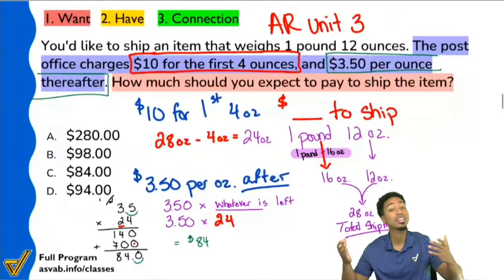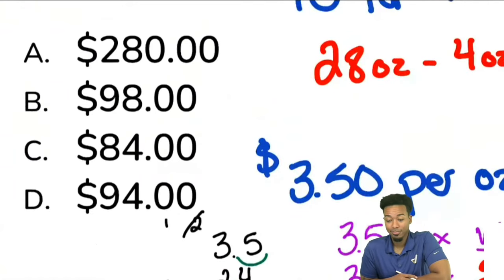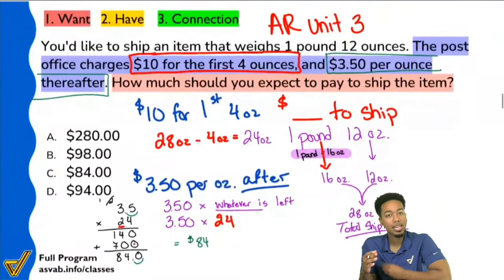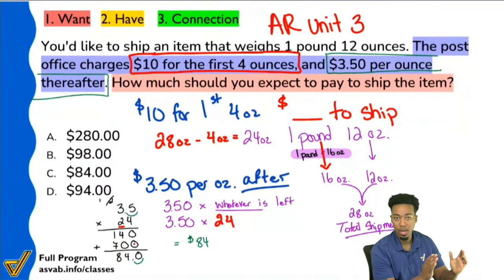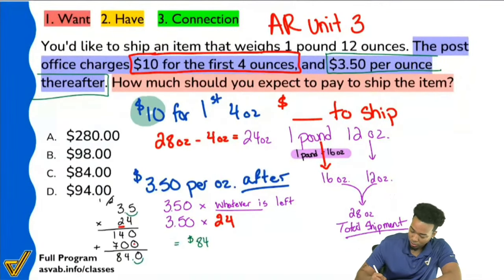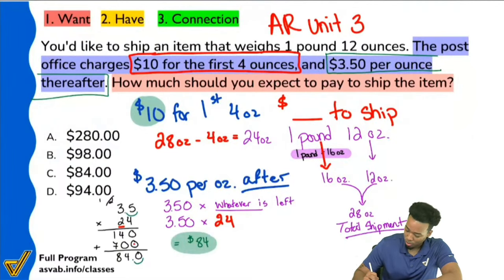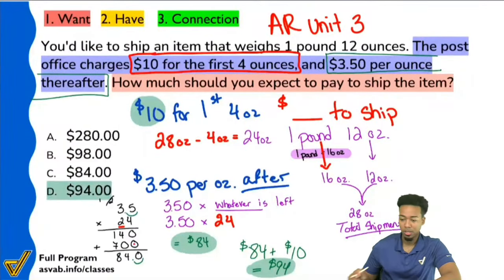Here's what some people might do — they get excited: we calculated $84, we see 84 as an answer choice C, so that must be it, right? No. We forgot the $10 from the first four ounces. This is something a lot of people suffer from — forgetting what the final result should be. The final result is the cost of the first four ounces plus the cost of the rest. $10 plus $84 is $94. The total cost is $94, and that's why D is the correct answer.